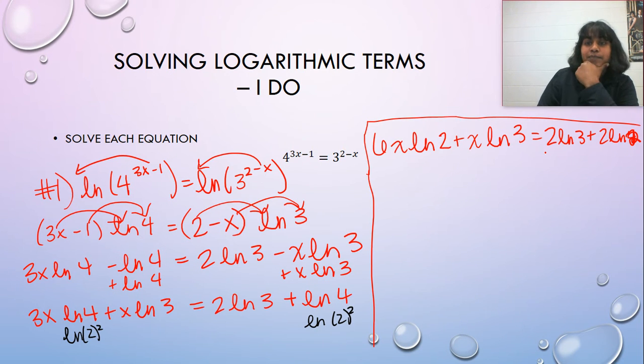So I can deal with this right-hand side. So let's deal with the right-hand side, and then we'll deal with the left-hand side. So if I'm dealing with the right-hand side, I can rewrite this as the natural log of 3 squared plus the natural log of 2 squared.